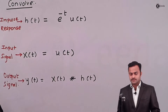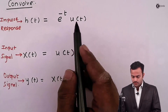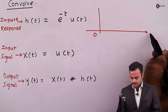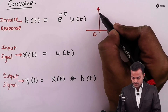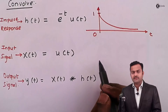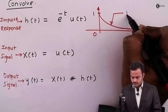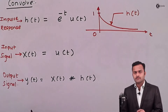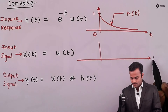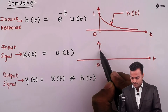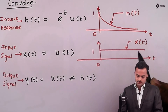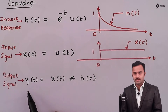The first thing is that we will plot the signals. For e^(-t) * u(t), because of u(t) this signal will exist from zero to infinity. On the t-axis we get a signal that has value one at t = 0. For x(t), which is a unit step, it will have value one from zero to infinity. These are the two signals given and we need to find their convolution to get y(t).